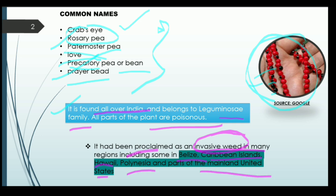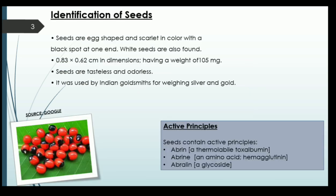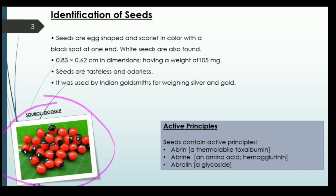Abrus was also declared a weed in the Caribbean islands, Hawaii, Polynesia, and other parts of the United States. Now, how to identify the seeds of the Abrus plant: the seeds are egg-shaped, meaning somewhat oval, and are scarlet in color — that is a variation of red. The seed has a black spot at one end. Even white seeds are also found in some cases.